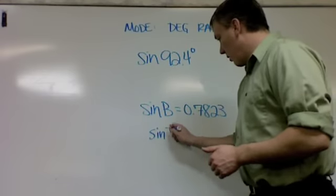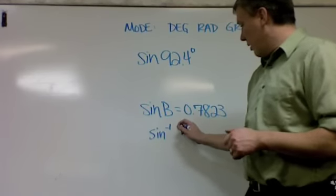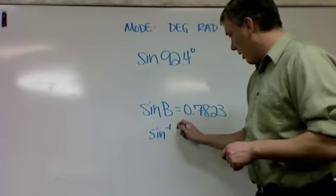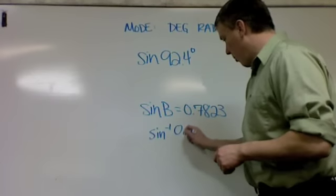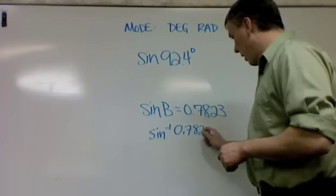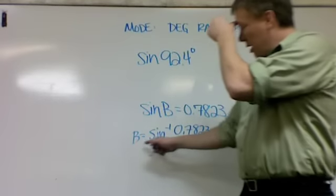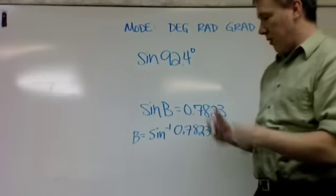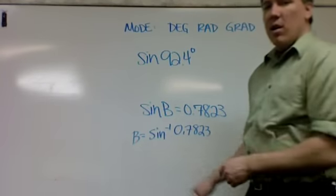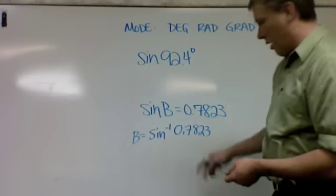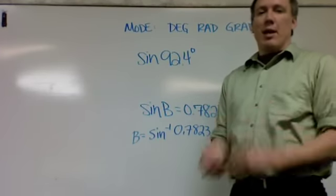So on my calculator, there's a button that looks like this. And it's usually right above sine where I have to hit like second than that button. And it looks like this. A little negative one. Almost looks like a power. It's not. But it has a certain idea to it. And then I type in this number, 0.7823. That is what the angle B equals. B equals the sine inverse of this. So on my calculator, either type this number and then go to sine inverse, or if it's in a different calculator, sine inverse, this number, hit enter. And it will tell me what the angle B is.